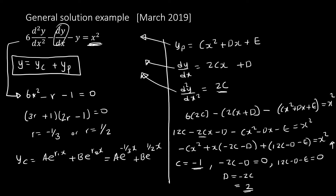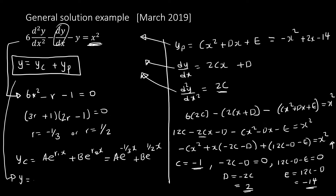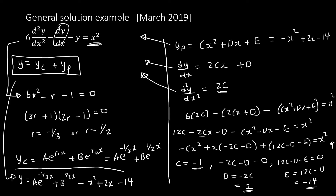For the constant terms: 12c minus d minus e equals 0 (since there are no constants on the right). Solving: e equals 12c minus d equals 12(−1) minus 2 equals minus 14. So yp equals minus x squared plus 2x minus 14.